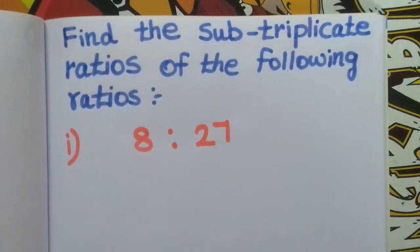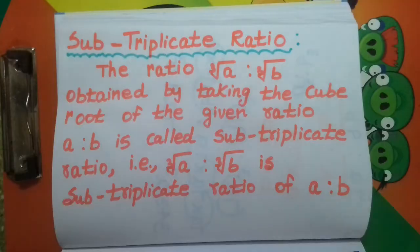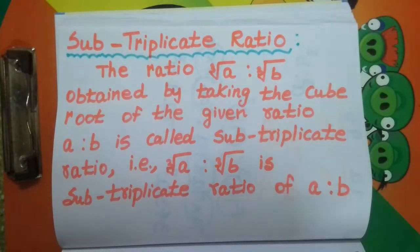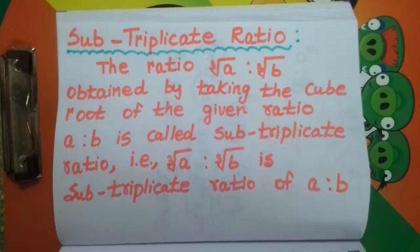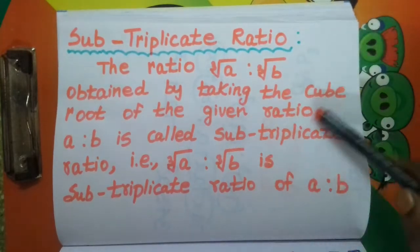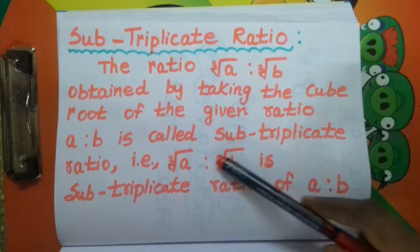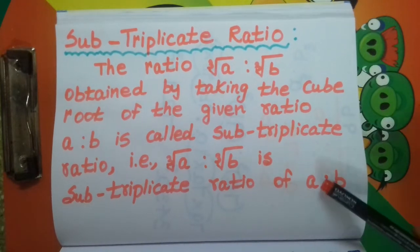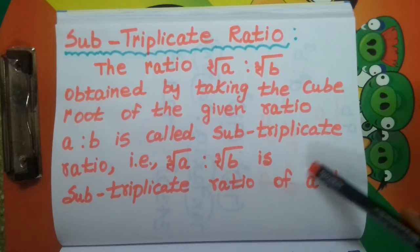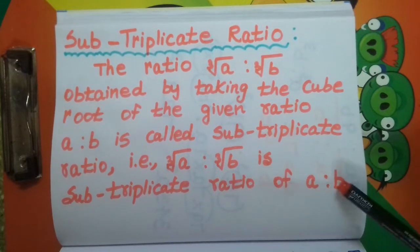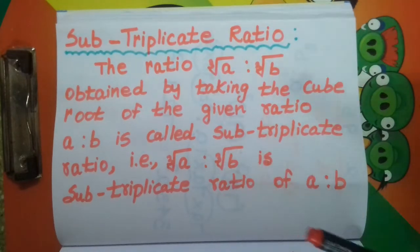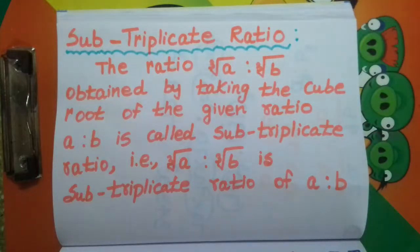Find the sub-triplicate ratios of the following ratios. The sub-triplicate ratio is defined as the ratio cube root of A is to cube root of B, obtained by taking the cube root of the given ratio A is to B. So A is to B — A is the first term called antecedent, B is the second term called consequent. We take the cube root of the first term and the cube root of the second term. This resulting ratio is called the sub-triplicate ratio.